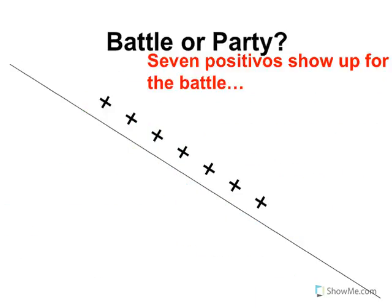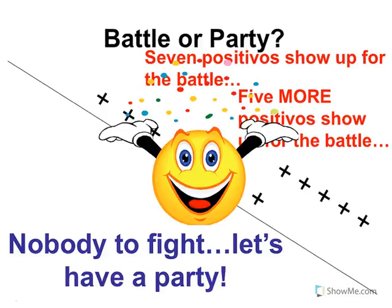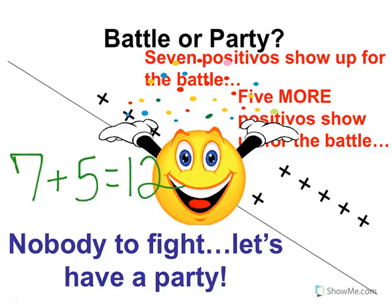Now we have to decide: are we going to have a battle or a party? Seven positivos show up, then five more positivos show up. Now listen — there's only positives. There's nobody to fight. All the positives are just going to hang out together; they're not going to battle each other. They're all on the same side. So we've got a party. Seven positivos, five more positivos show up — how many positives partying all together? Twelve.